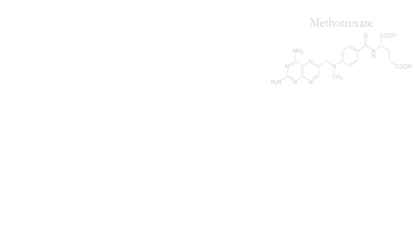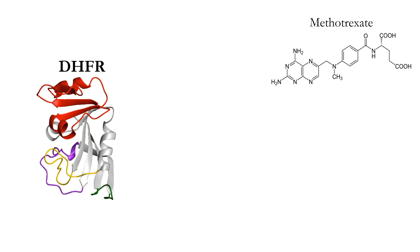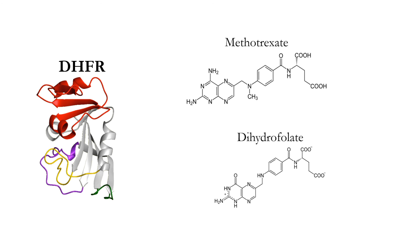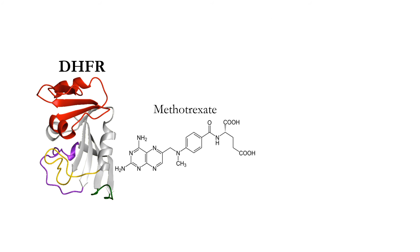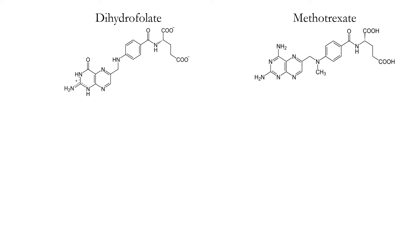Methotrexate acts as a competitive inhibitor to dihydrofolate reductase. Its affinity for binding to DHFR is 1,000-fold that of dihydrofolate. So when methotrexate is present in a cell, it will bind to DHFR's active site instead of dihydrofolate.